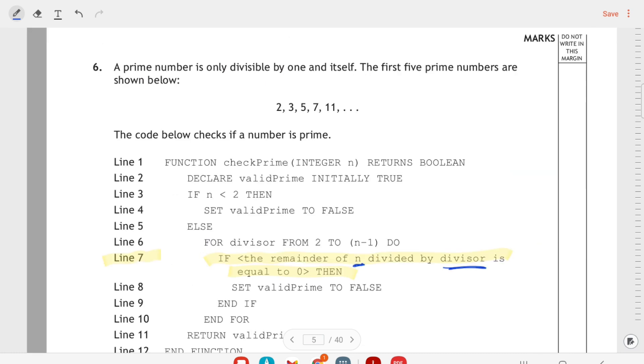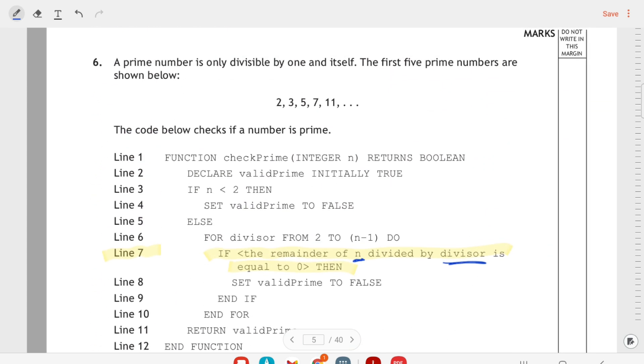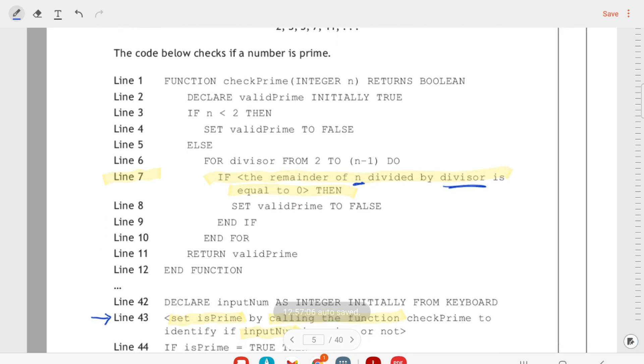So then this is the last one of the short response questions. Although it takes up a full page, it's actually only two very short questions down the bottom. It's mostly code that we've got to read. So it says a prime number is only divisible by one and itself. The first five prime numbers are shown below. There's code below to check if a number is prime.